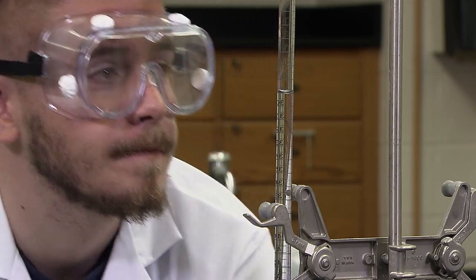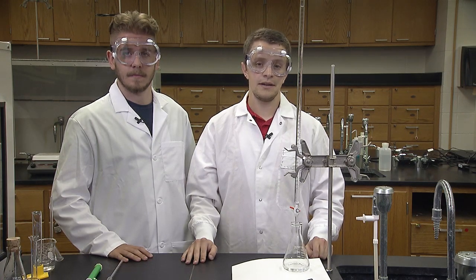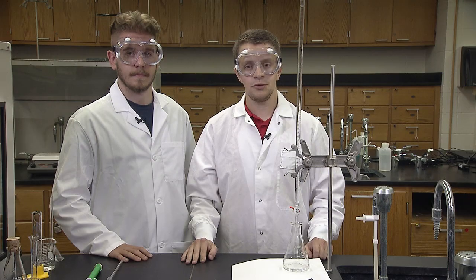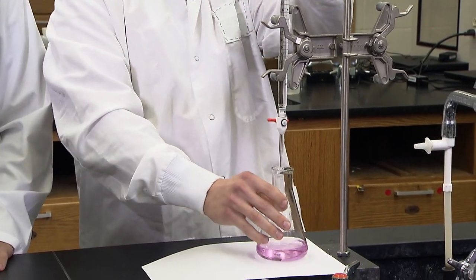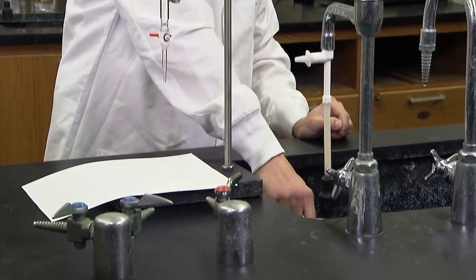I see 29.08 milliliters. Always record two decimals even when the meniscus is touching a line. If it does touch a line, just record .00 for the decimals. The flask can be emptied down the drain and cleaned to prepare for the next trial.